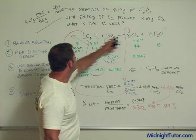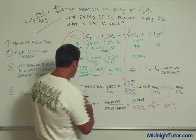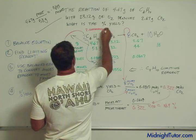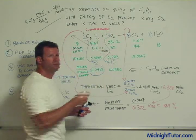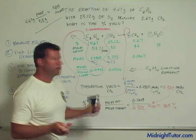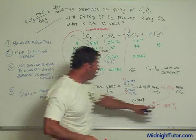because these are absolute, right? This two, the two is actually 2.0000000000000000. It's infinite in terms of accuracy, right? That's an absolute ratio. So those don't affect your significant figures. So we started with three, we better end up with three.